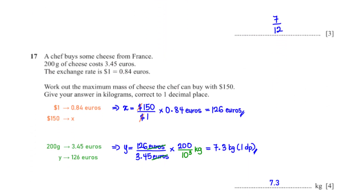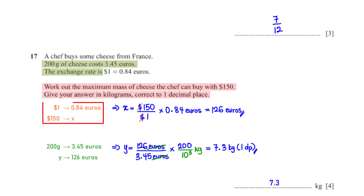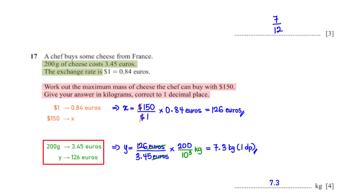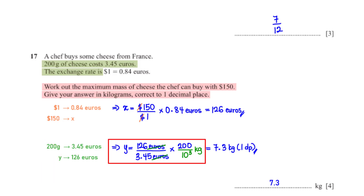A chef buys cheese from France: 200 grams costs 3.45 euros. The exchange rate is 1 dollar = 0.84 euros. Find the maximum mass of cheese the chef can buy with 150 dollars. First, 150 dollars converts to 126 euros. Then, setting up a proportion with 200 g costing 3.45 euros, we find the mass y, which equals 7.3 kilograms rounded to one decimal place.